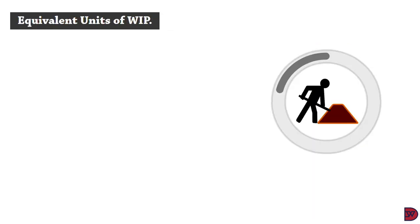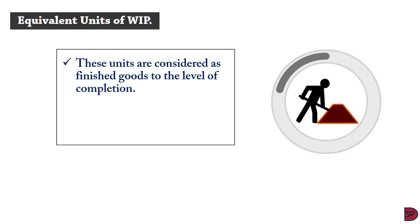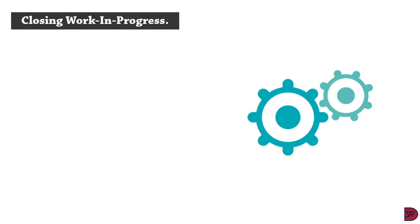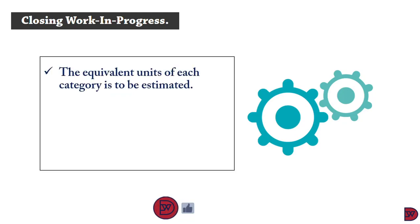Equivalent units of work in progress is the portion of the work in progress that is considered to be finished at their level of completion. If 100 units of a product is only 70% complete at the end of the production process, this will be considered 70 finished goods. If they were 50% complete, it will be deemed as 50 finished units. The equivalent unit of 100 products being 70% complete is 70 units.